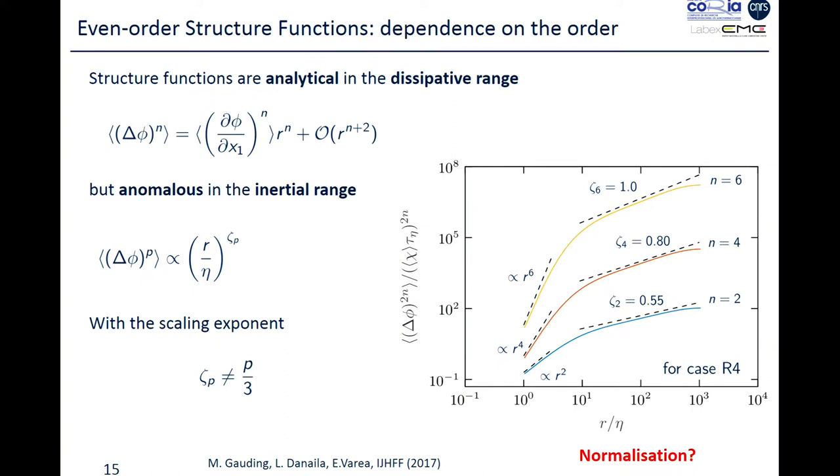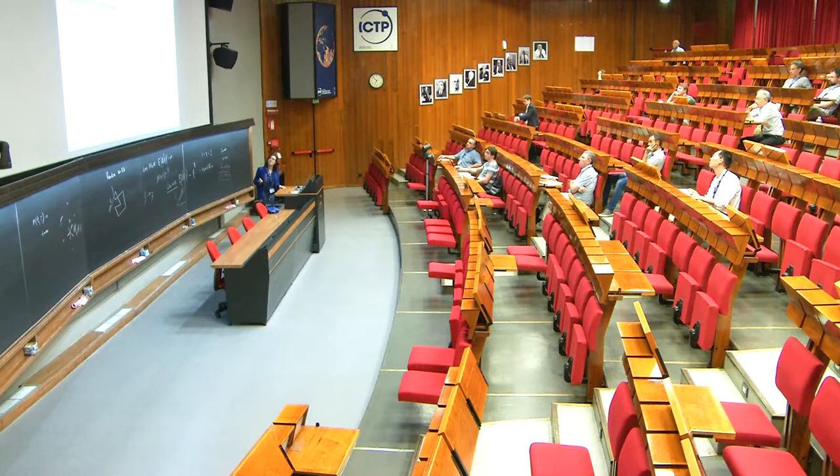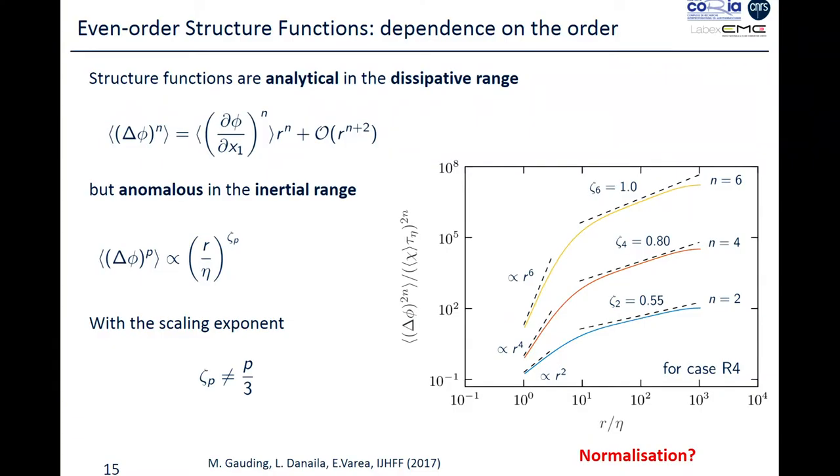When we look at the even-order structure functions, here we look at n equal to 2, 4, and 6, so second-order, fourth-order, and sixth-order. This looks like that as a function of the normalized scale. At small scales, they are analytical, so for the second-order moment, we perform a Taylor series expansion, so the second-order will be proportional to R-square, fourth-order R-4, et cetera. In the inertia range, so for scale-largers, if that is allowed to exist by the Reynolds numbers, we have what we call anomalous exponents. These are the values we obtain for this case, which is an R-lambda of 500 and something.